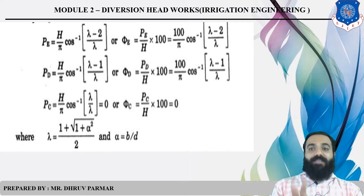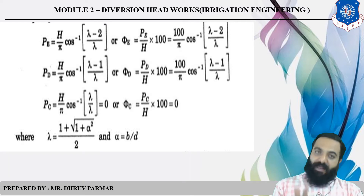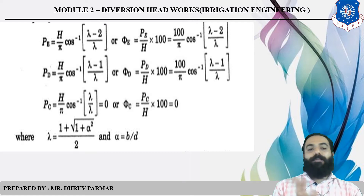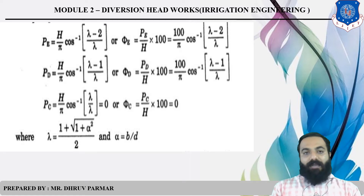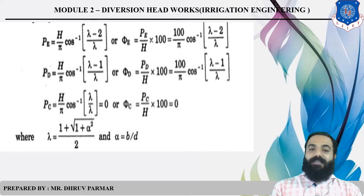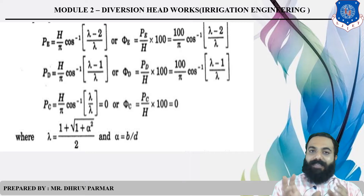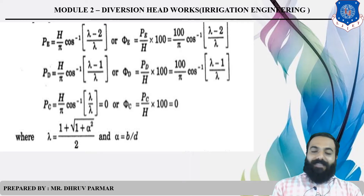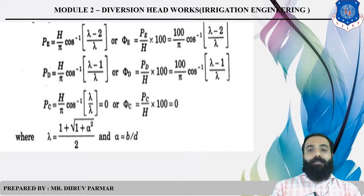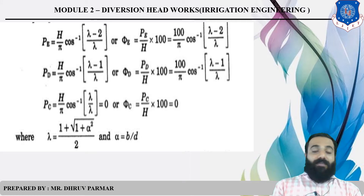To find uplift pressure at a downstream cutoff or downstream pile: first find alpha, then lambda, then PE, then PD. This is the method for downstream cases. This formula is very important for exams — the most important case for the exam or competitive exams is the downstream and upstream case. Please remember these formulas; they are directly given with no derivation or proof.